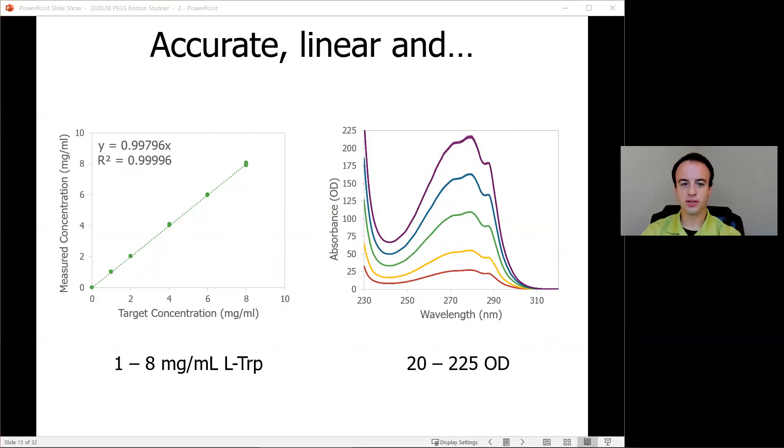The average concentration, mean recovery, and relative standard deviation of the target concentrations were calculated by Stunner analysis software for each of the standards. Plotting the average result of each standard shows the great linearity of Stunner over the dynamic range of 20 to 225 OD shown on the right, and again the linearity and accuracy shown on the left by indicating a high R-squared value and a linear slope very close to one.